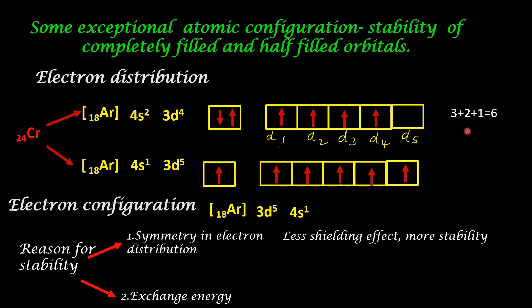What about the second case? The D1 electron can have four possible exchanges. D2 can have three possible exchanges. Electron in D3 can have two possible exchanges. And electron in D4 can have one exchange. The total exchange is 10. So the second type of distribution has more exchange energy. So that is stabler than the first option. Greater the exchange energy, greater the stability.